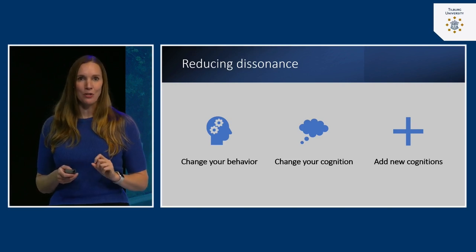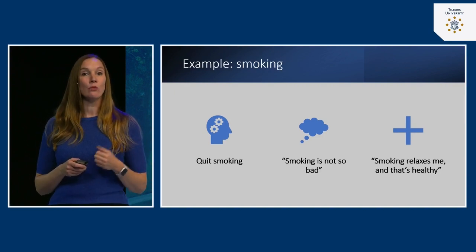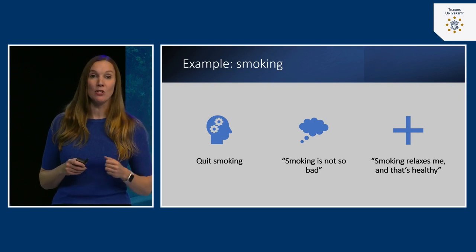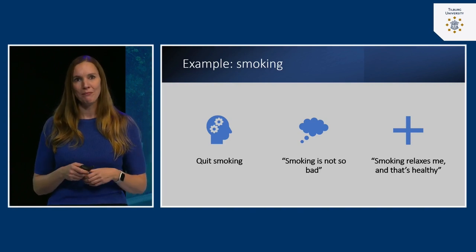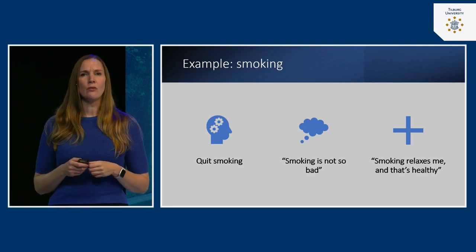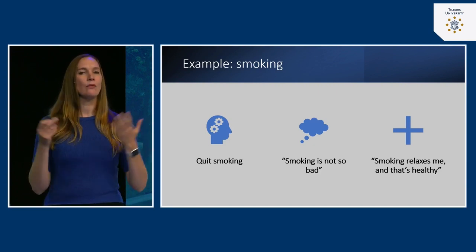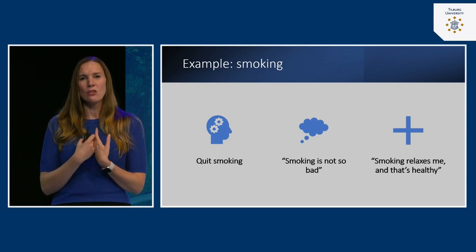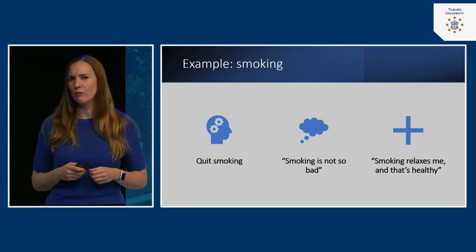The third option is to add new cognitions, and this is what we oftentimes do. For example with smoking: the most straightforward way would be to quit, but for many people that feels like an impossible option. So instead, you might change your cognition and say 'smoking is actually not so bad.' This is also something politicians love to do — denying climate change, for instance, removes dissonance: you can take planes, eat meat, because the world is actually doing very well.